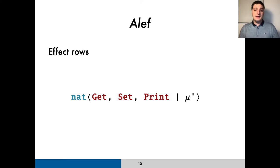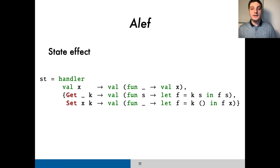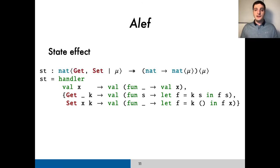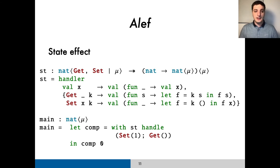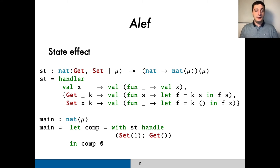Then, a row can be thought of as a set of operations alongside an effect variable. Now, we can write the type of this handler. As expected, the handler transforms a computation that invokes the state operations into a computation that returns the state carrying function that handles it. So, with this handler, we can define a very simple program in which we first set the state to be the number one and then get the current state. We handle this computation with our state handler and finally run the resulting function with an initial state of zero. As expressed in its type, the main computation is pure because both operations are handled by the state handler.